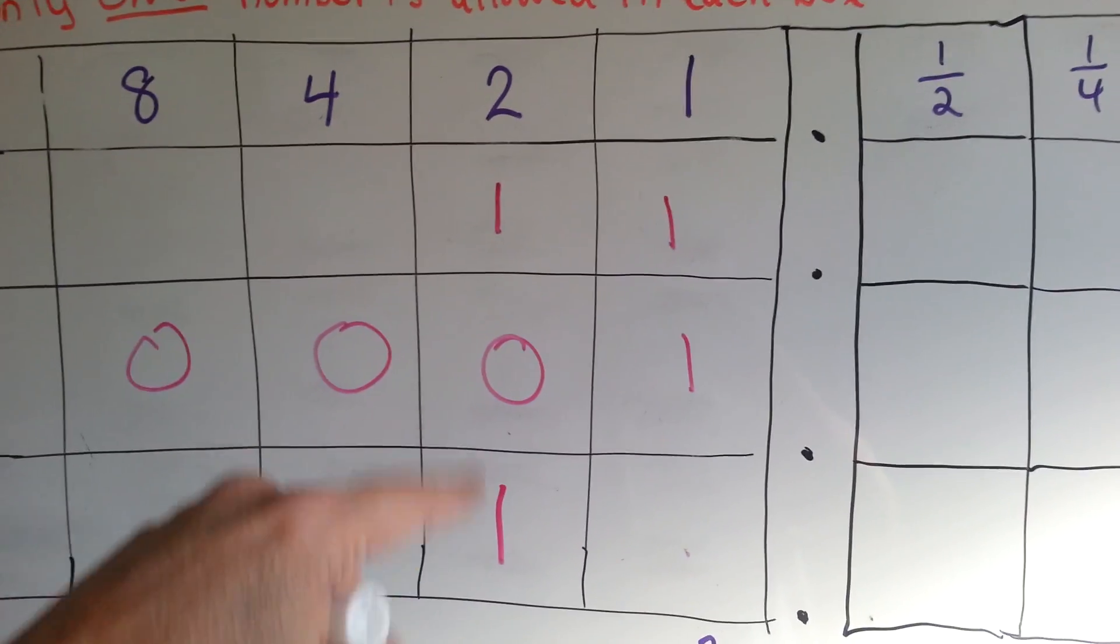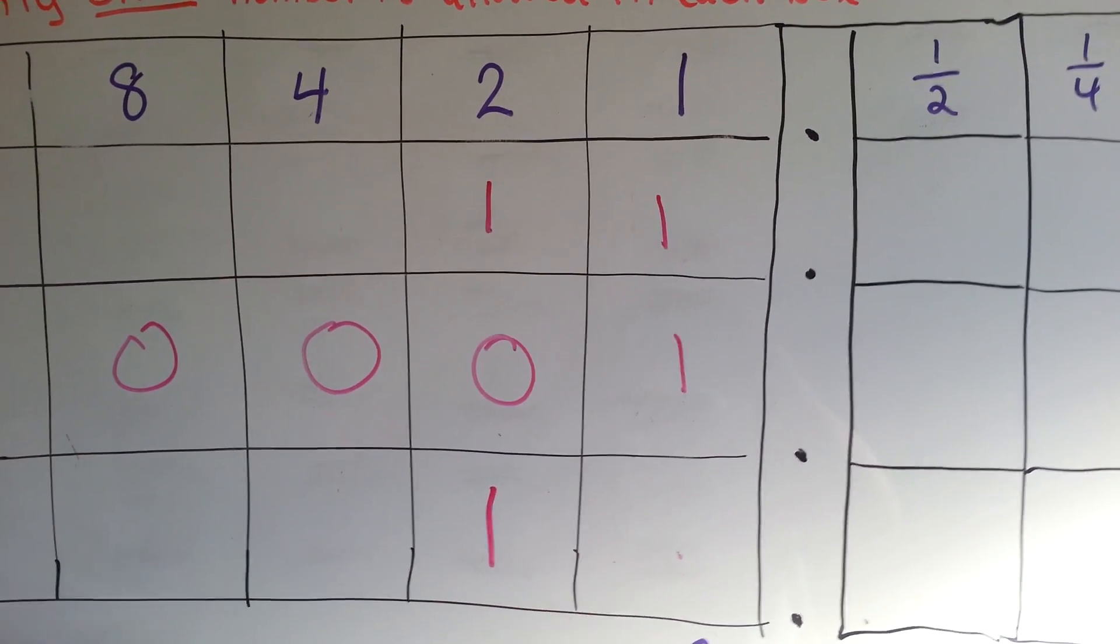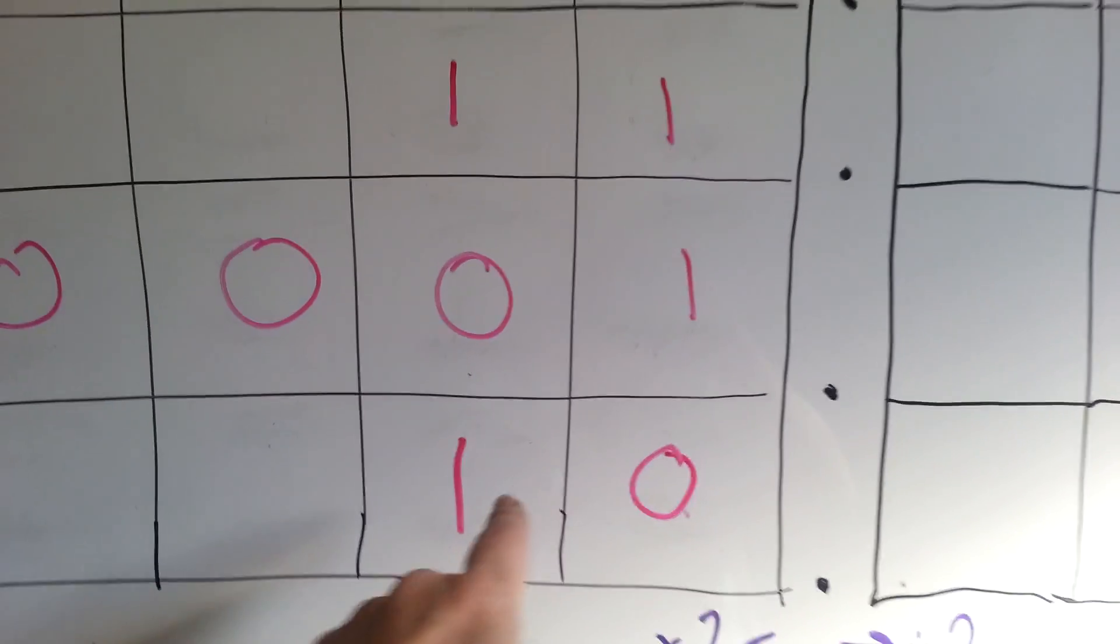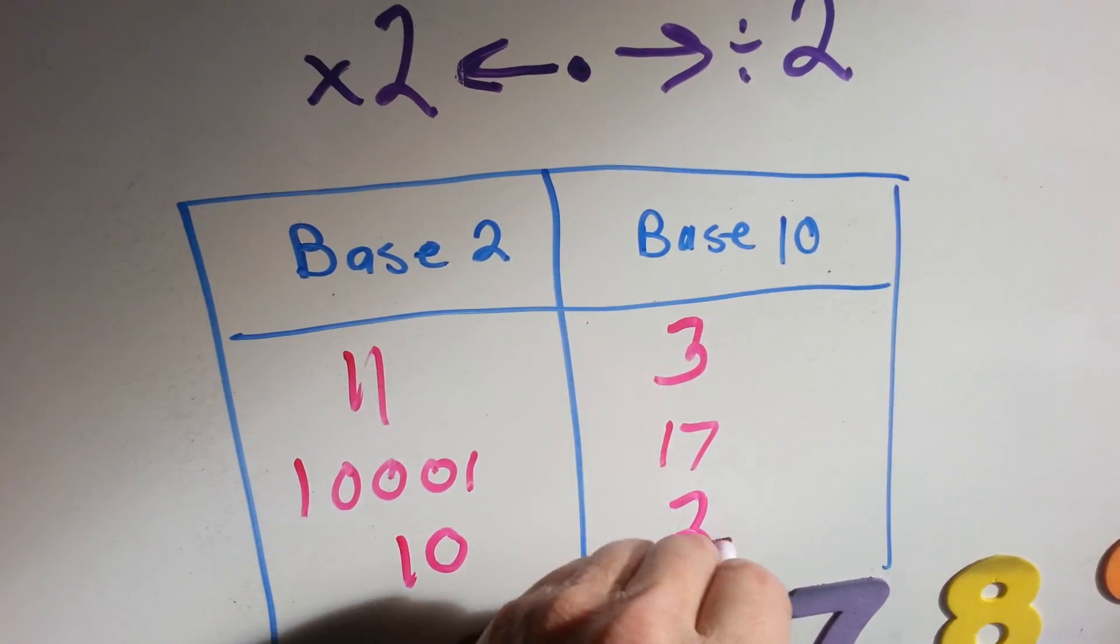You have 1 two and no 1s. So, the number 2 in base 2 is written as a 10.